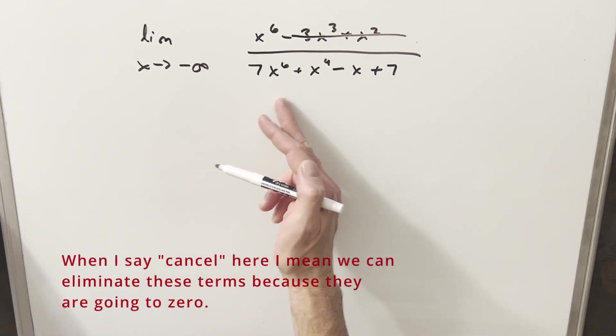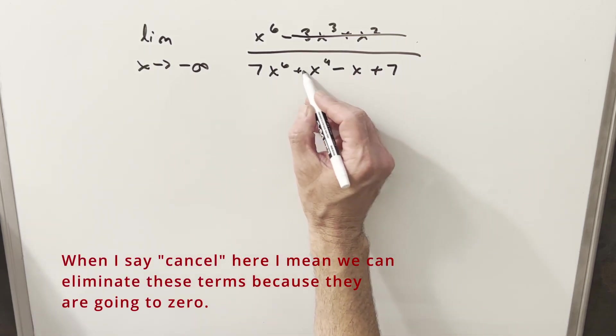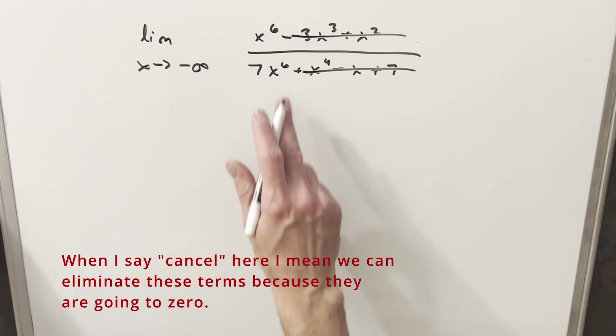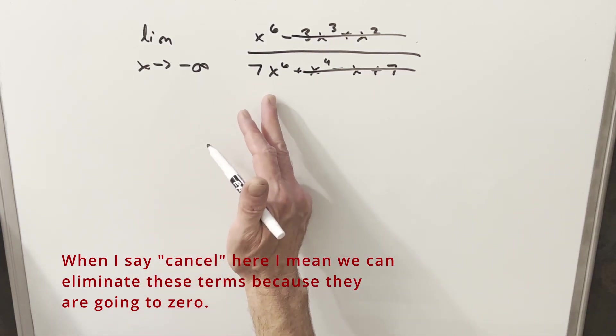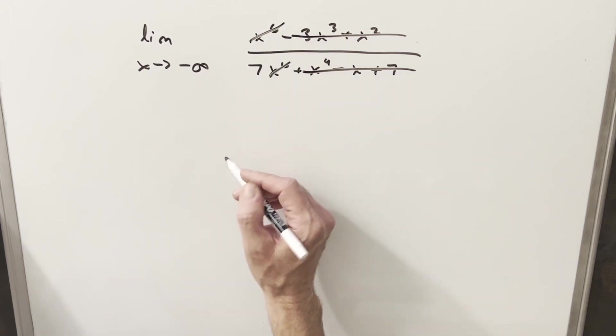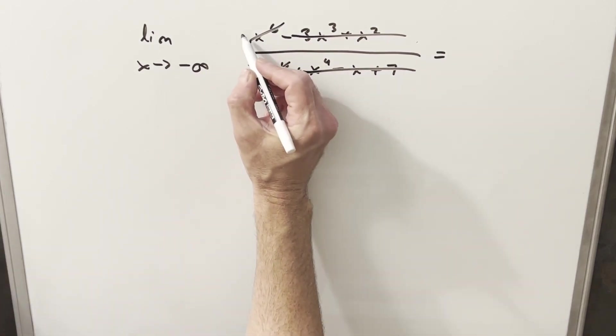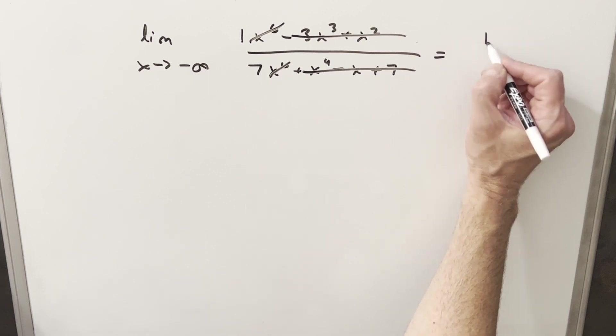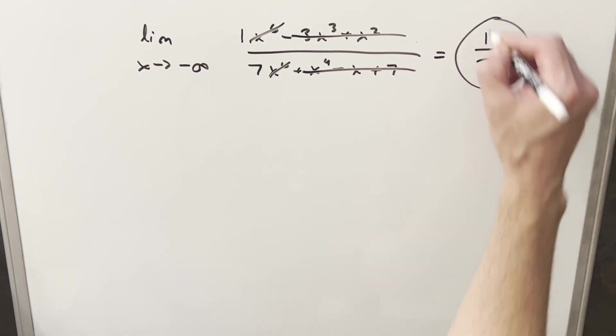And then doing the same thing in the denominator, all the lesser degree terms are going to cancel. So we can just cancel it off and we're really just looking at x to the 6th over 7x to the 6th. But then we can just cancel our x to the 6th, right? And so all we have left here in the numerator is a 1, so this is actually going to be the limit of this. It's going to actually be just 1 over 7.